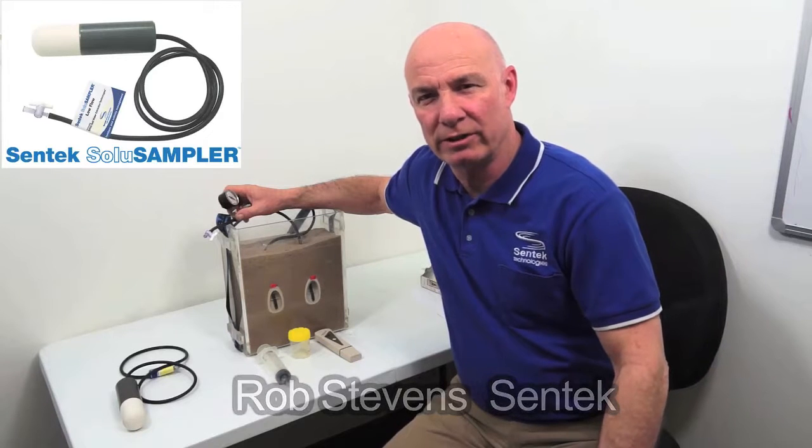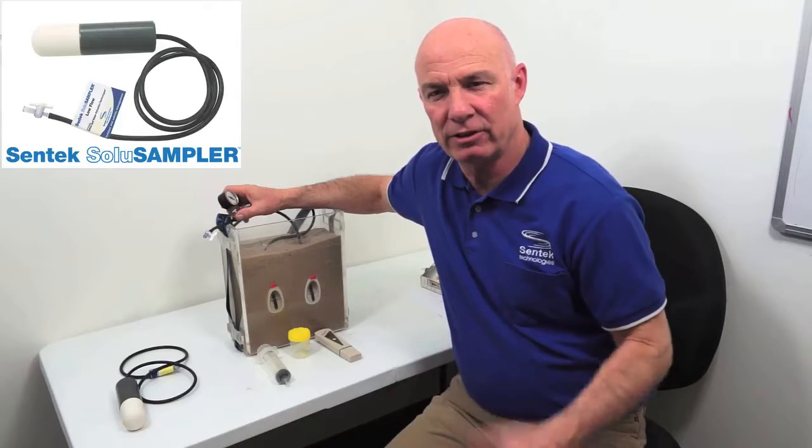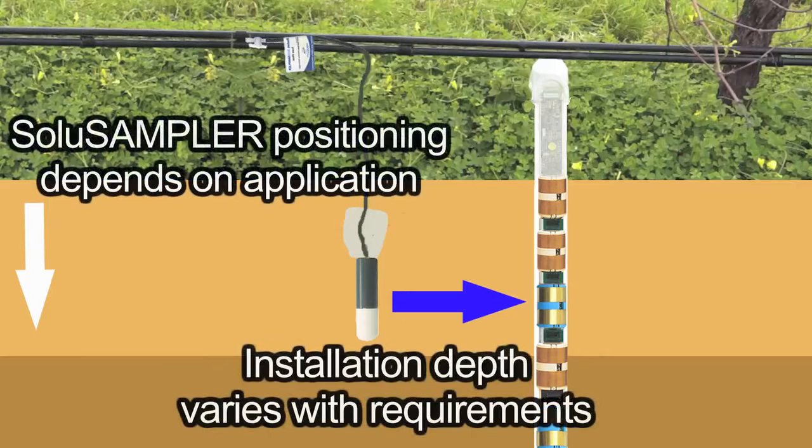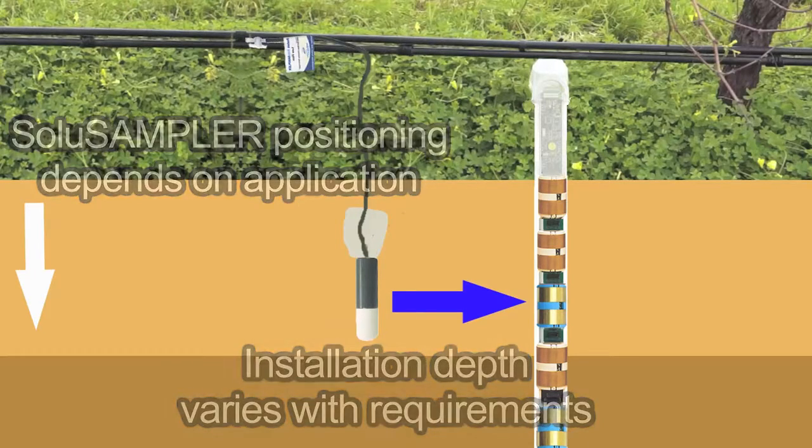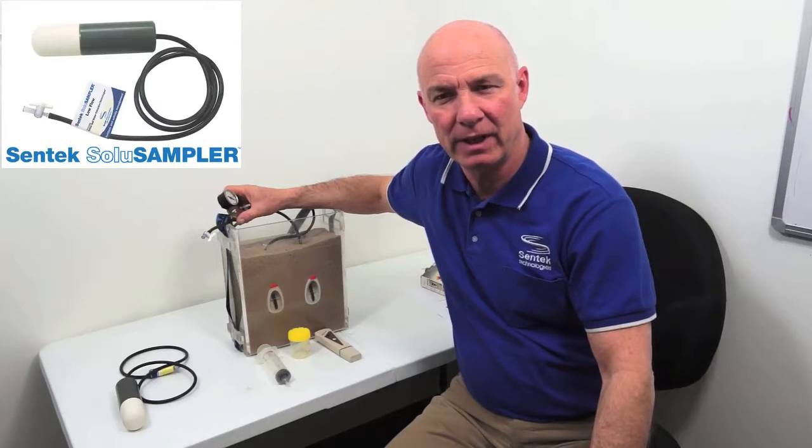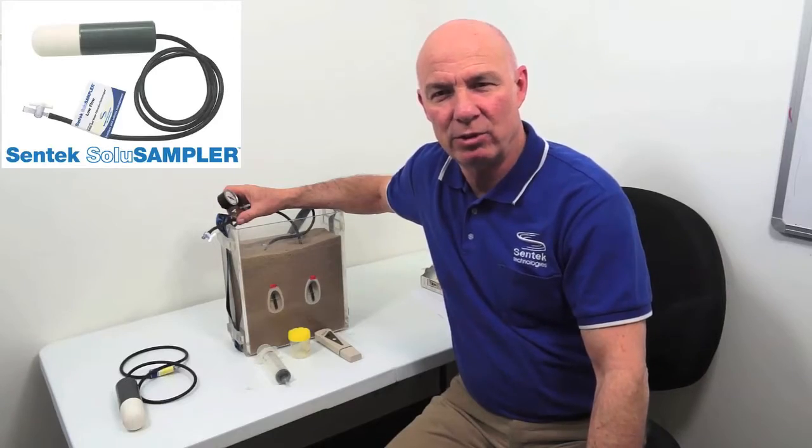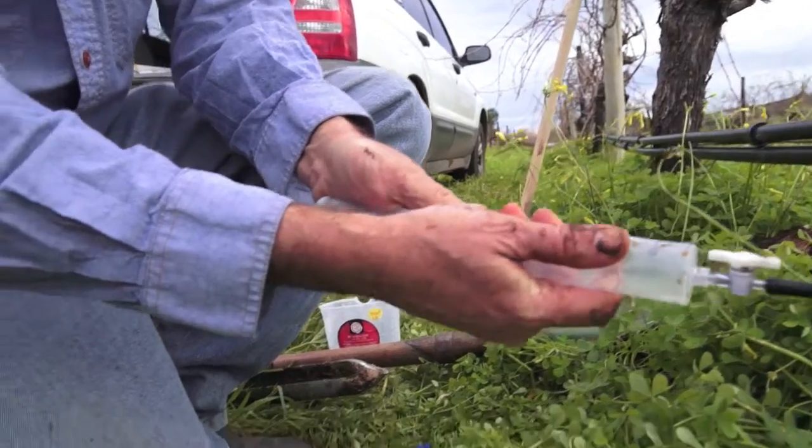Once the solu-sampler is installed, we need the solution inside the solu-sampler to equilibrate with the solution in the wider soil. We reckon that can take up to two weeks, and during that time we suggest that it would be good if one irrigation or rainfall event actually causes water to pass through the soil past that sampler. And the other thing we recommend is that you extract two solu-sampler volumes from it during that two-week period.